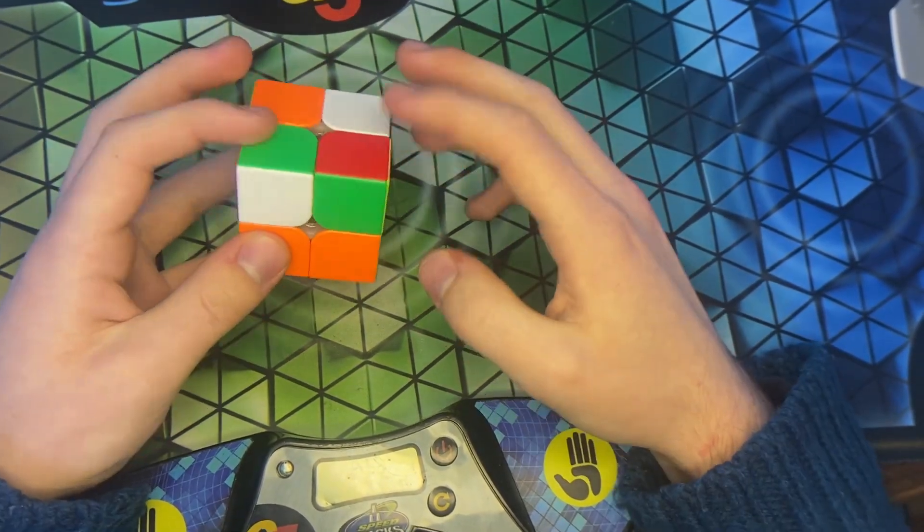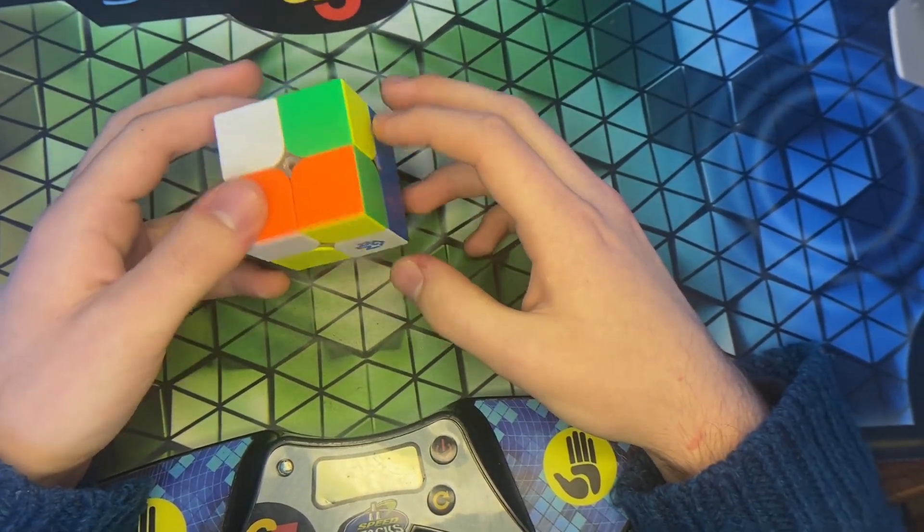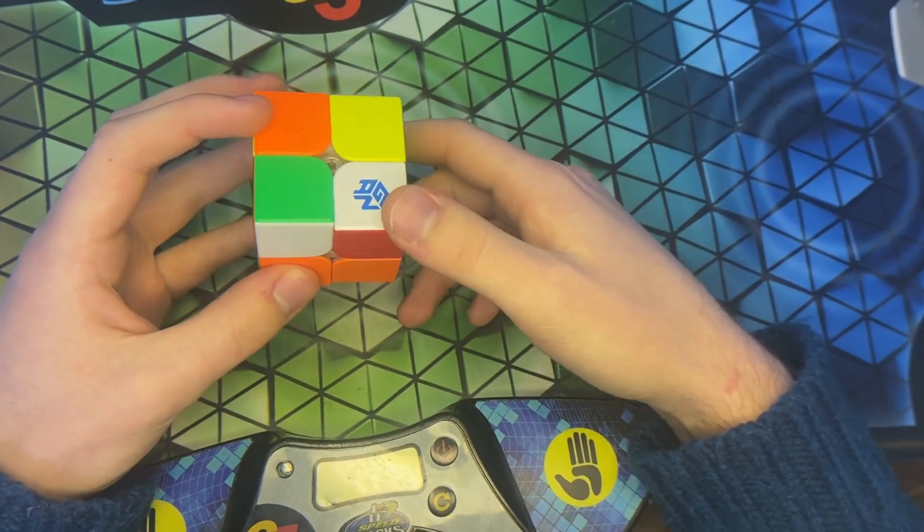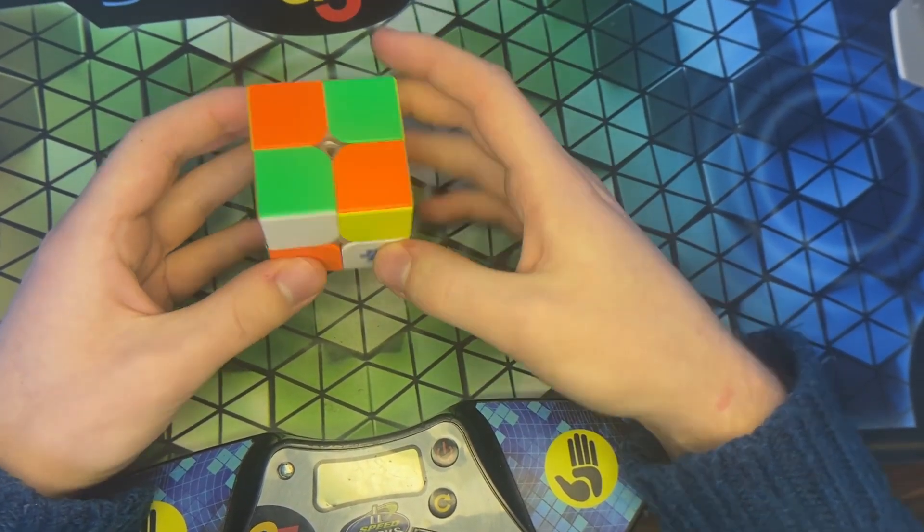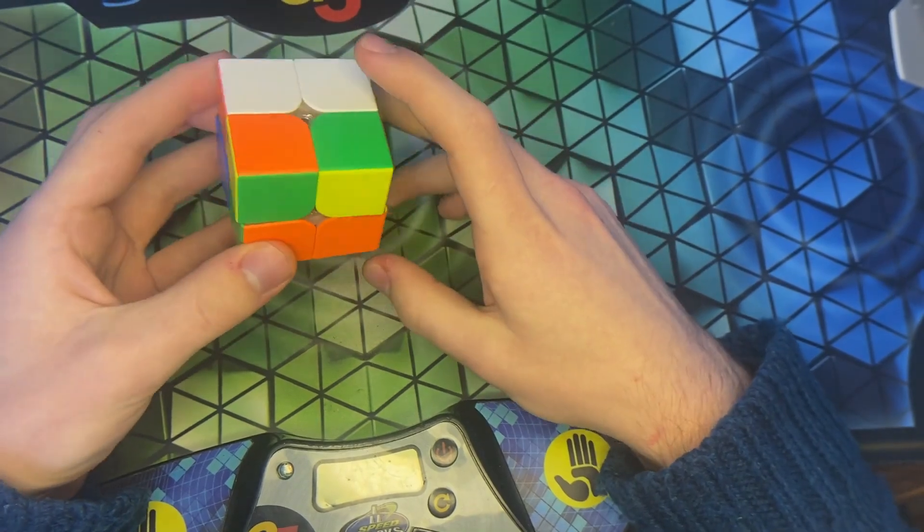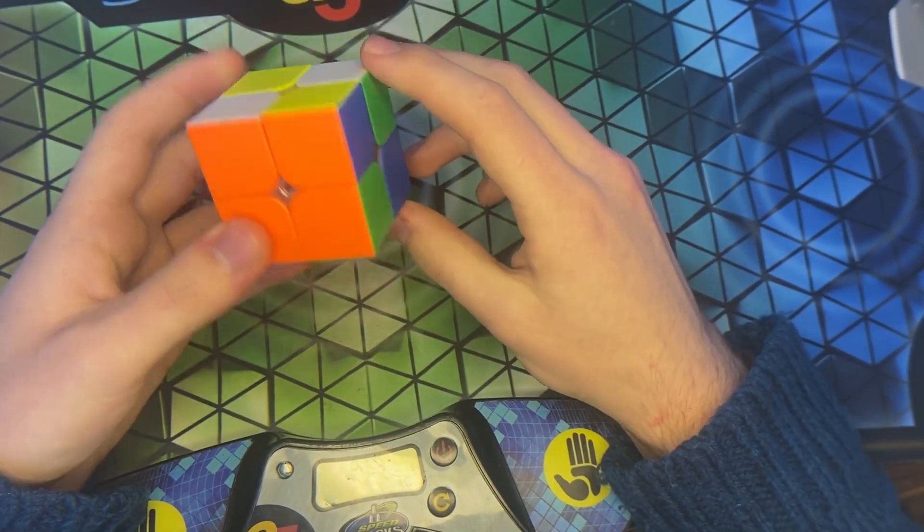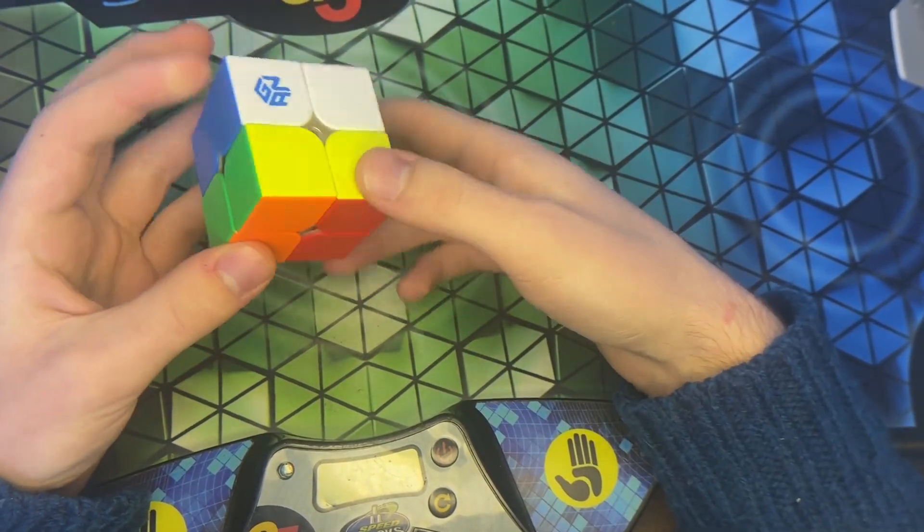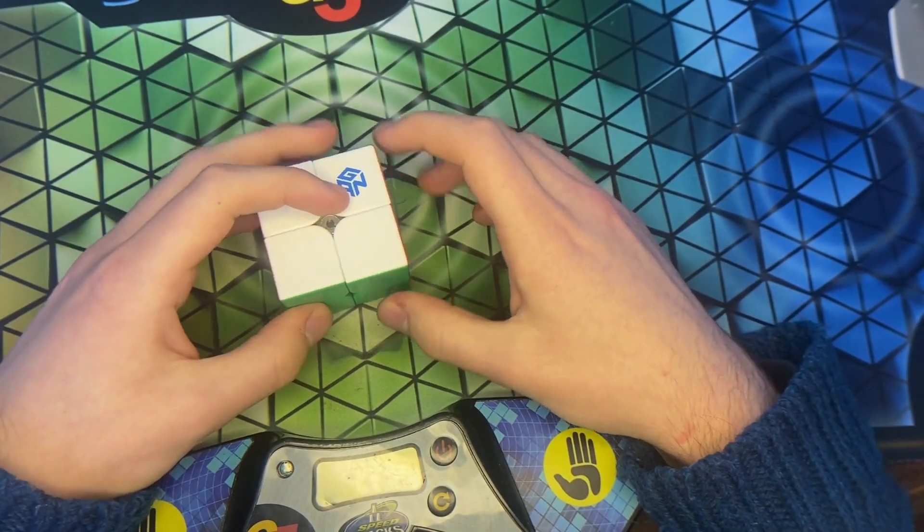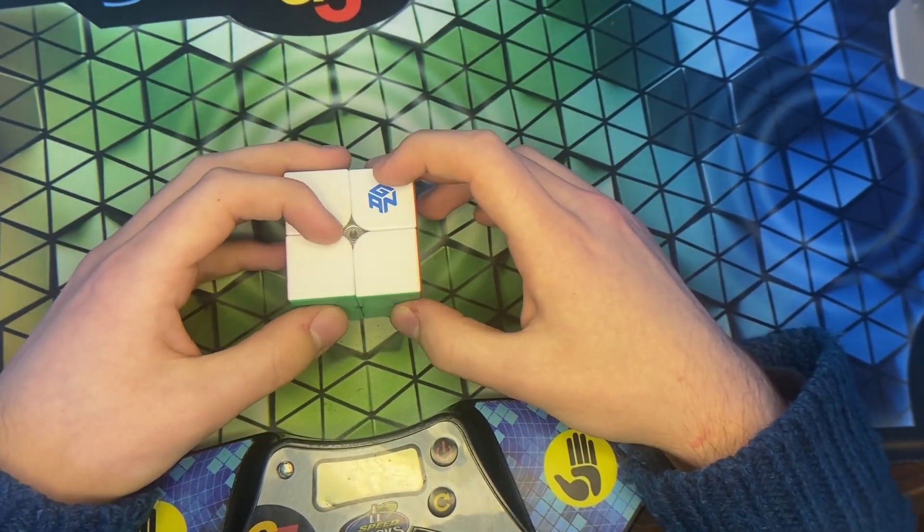This one is just R2 and then anti soon. So, you can cancel into that with R prime U2, R prime U prime. And then insert. And then you can actually cancel into doing R2 U2, R2 F2 to finish the cube. And there's the last solve.